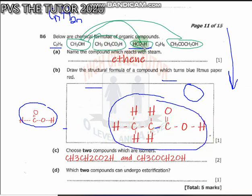Choose two compounds which are isomers. Isomers are substances which have the same molecular formula but different structural formula. When you look at these two compounds, they are the same when you count the number of hydrogen and carbon atoms.